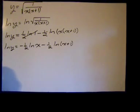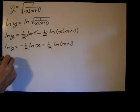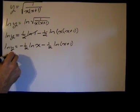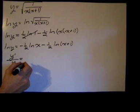Now we can take the derivative of both sides. The derivative of the natural log of y with respect to x is y prime over y, or 1 over y times y prime, however you think of it.